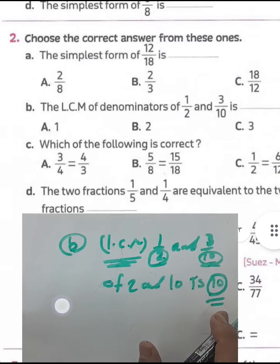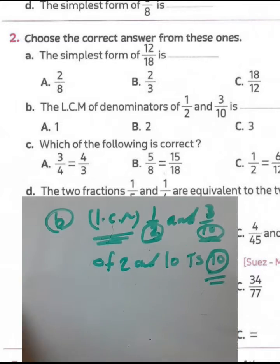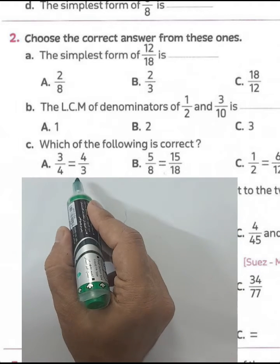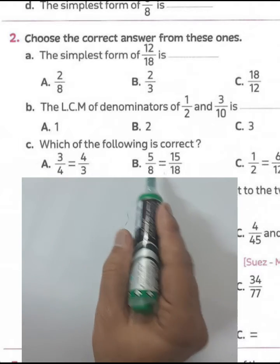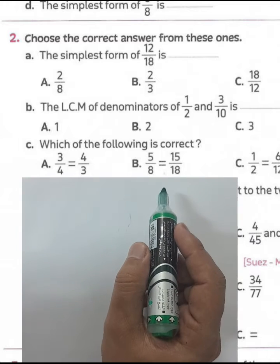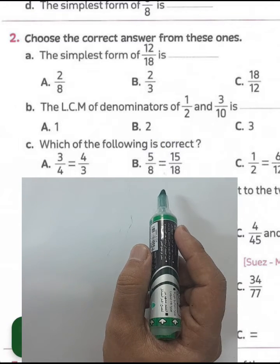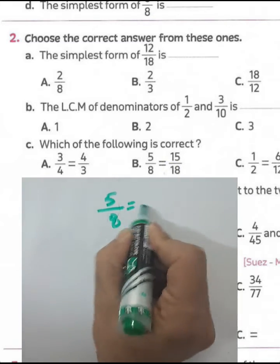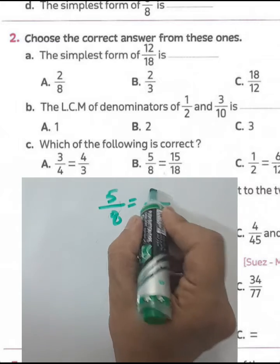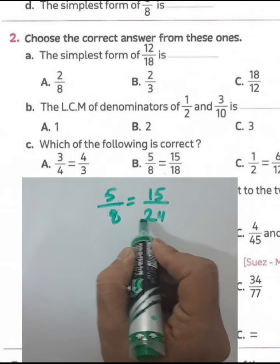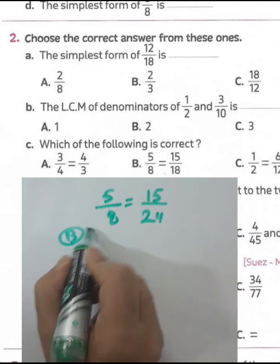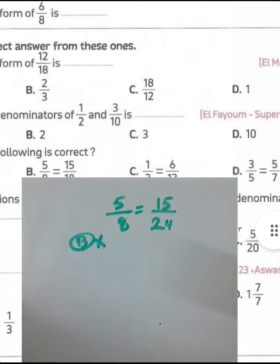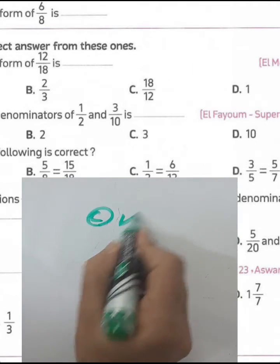Question letter C: which of the following is correct? First, three over four equals four over three — that's wrong. Five over eight and fifteen over eighteen is false, because three times eight equals twenty-four, not eighteen. Letter C — one-half equals six over twelve — is correct, because six is half of twelve. Answer: letter C.